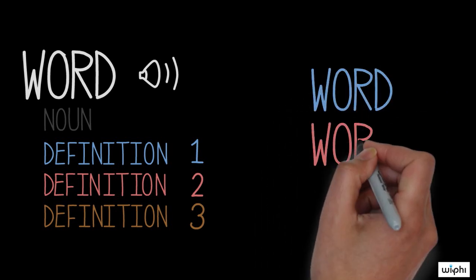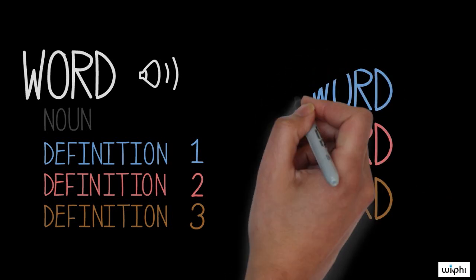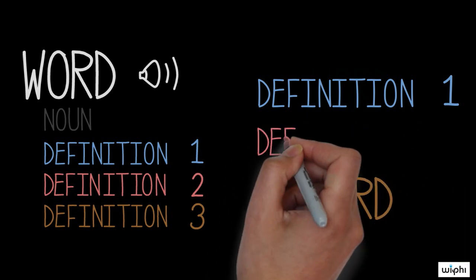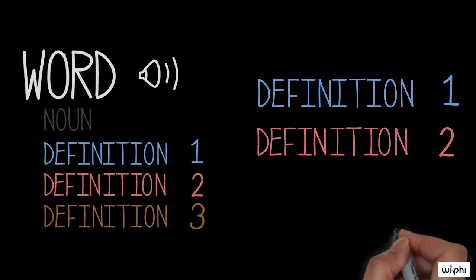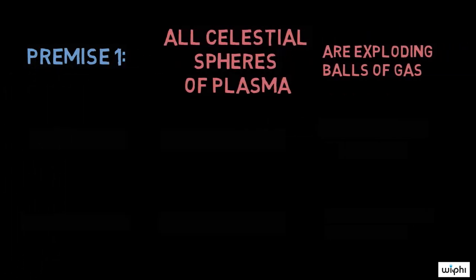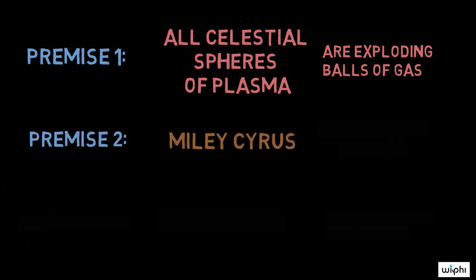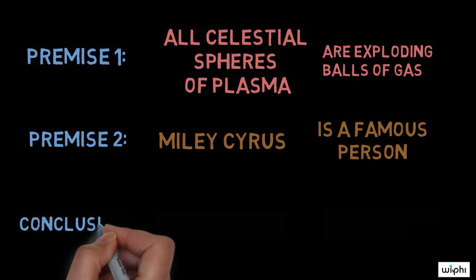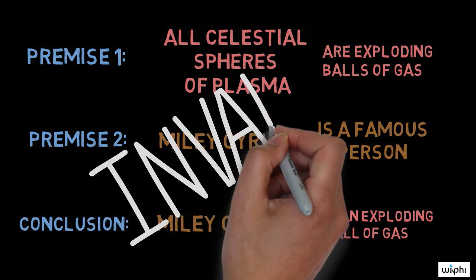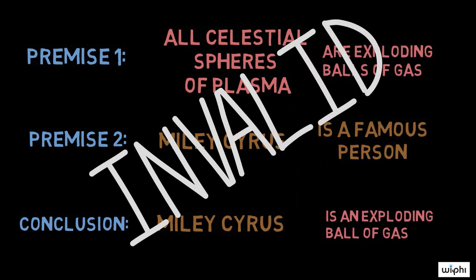Since equivocation results from multiple meanings of a single term, a helpful strategy to expose this fallacy is to restate the premises of the argument without the ambiguous term. For example, let's substitute our definitions of the word 'star' into the premises. Premise 1: all celestial spheres of plasma are exploding balls of gas. Premise 2: Miley Cyrus is a famous person. Therefore, Miley Cyrus is an exploding ball of gas. Clearly, this argument is invalid once we've gotten rid of the ambiguous term 'star.' Even though both premises are true, the conclusion does not follow.